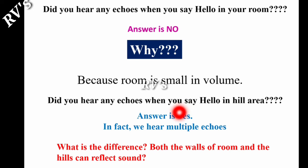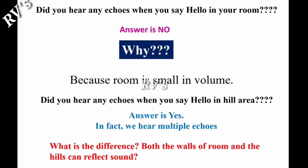In hill areas, when we say hello, we hear hello, hello, hello multiple times. In fact, we hear multiple echoes. Then what is the difference? We are not able to listen to echo in the room, but we are able to listen to echo in the hill area. What is the difference? Both walls of the room and hill can reflect the sound. The reason is the distance between observer and the obstacle.